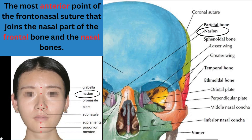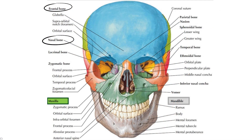Next is the nasion, which is the most anterior point of the frontonasal suture — located between the frontal bone and the nasal bone. The part that separates the frontal bone from the nasal bone is referred to as the nasion. Here is another picture to clarify: the blue part is the frontal bone, the orange part is the nasal bone, and the separation between them is the nasion.